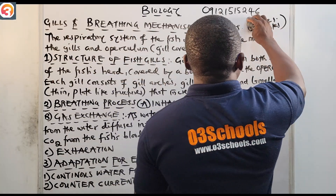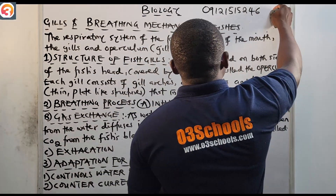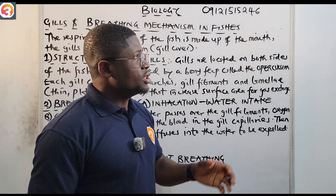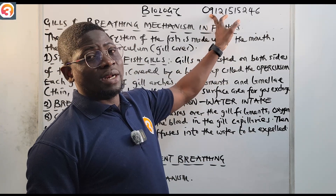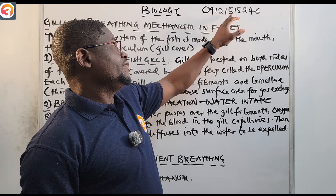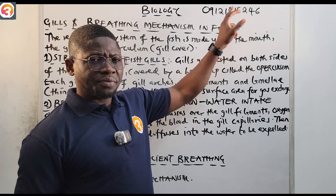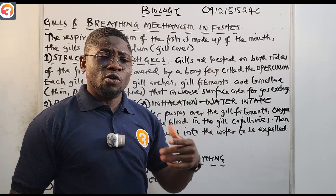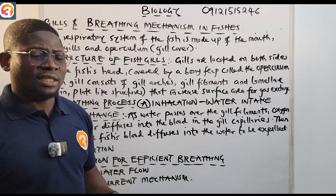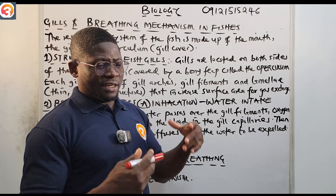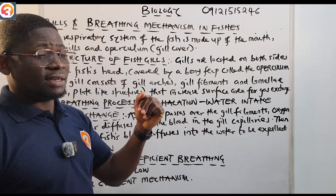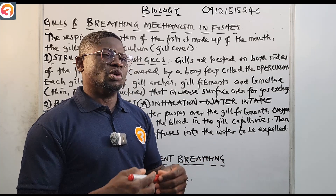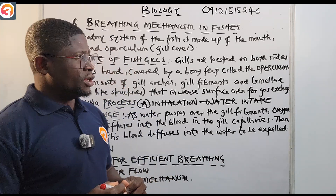Before I continue — in case you want to activate your O3 School JAMB CBT practice application, just send a message to this WhatsApp number. Also, if you want to download the app for your laptop or PC, simply send a message saying 'I need a link for PC or laptop' and we'll send you the link. Our WhatsApp is very effective and we attend to you almost immediately.